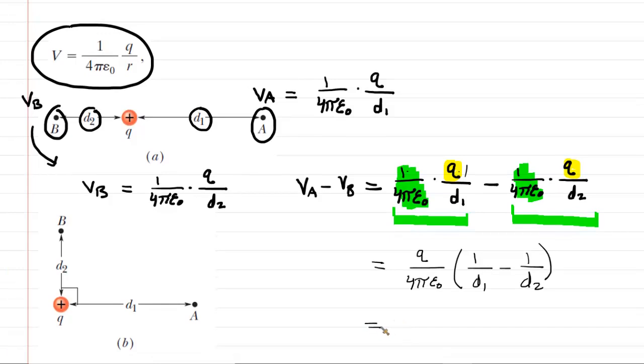We can now substitute in the known values. Q was given in the question as 1 microcoulomb, but let us be careful there, because 1 microcoulomb needs to be converted into coulombs. We would have 1 times 10 to the minus 6th coulombs. So that would be the correct conversion to go from microcoulombs into coulombs.